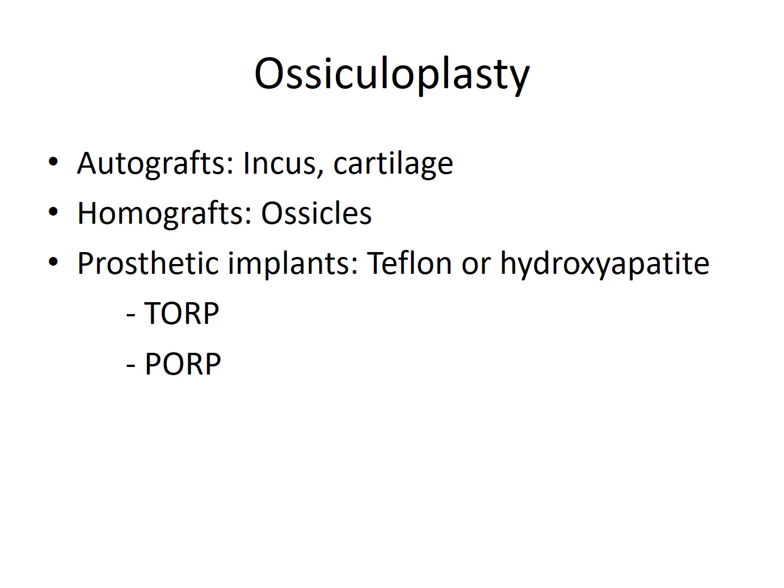Sometimes Homografts can be used, like ossicles from other persons. Prosthetic implants made of Teflon or Hydroxyapatite are also increasingly used nowadays — they can be either TORP or PORP. TORP is Total Ossicular Replacement Prosthesis, used when Malleus, Incus, and Stapes superstructure are all absent; it is placed between the Tympanic Membrane and the Stapes Footplate. PORP is Partial Ossicular Replacement Prosthesis, used when Malleus and Incus are absent but the Stapes superstructure is present; it is kept between the graft and the Stapes head.